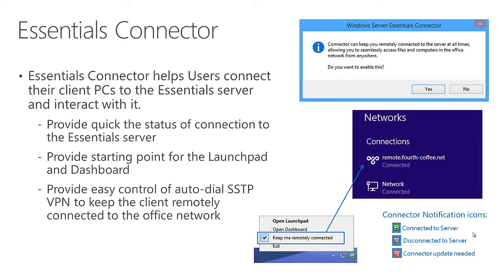This uses SSTP, a flavor of VPN that uses the HTTPS protocol, or secure web connectivity. It's pretty firewall-friendly and becomes very seamless to the end user in terms of accessing resources on the Essentials server, whether local or remote. This is something you can choose when defining different users' privileges - whether they have VPN access or not - giving another easy way to stay connected to the Essentials server.